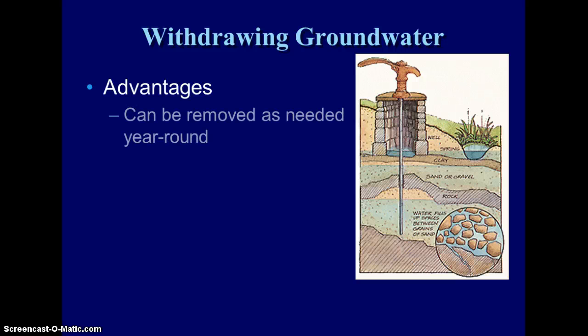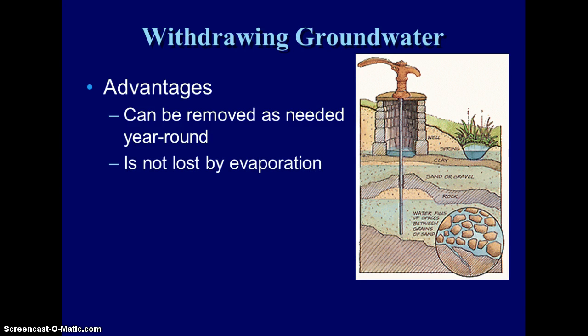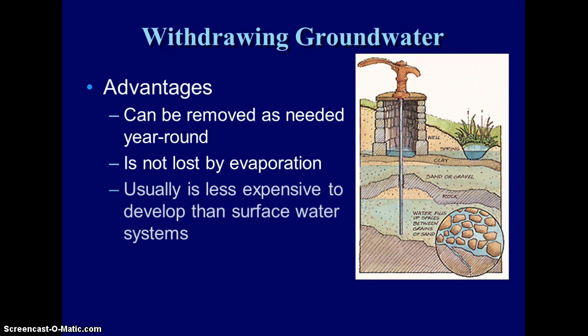The advantages to withdrawing groundwater as opposed to surface water is that you can remove it as it's needed. It's going to be there year-round; you're not going to have evaporation in the summer like you would from a reservoir. Usually it's less expensive because you don't have a big dam project that you're building on a river to create a reservoir. There's no upkeep — you're basically just digging a well that pumps the water out.